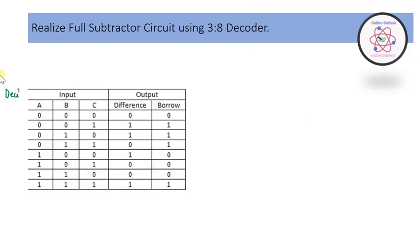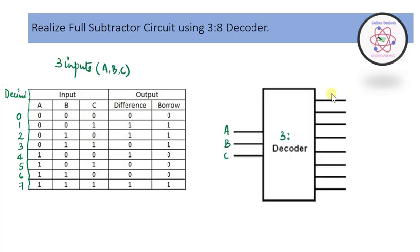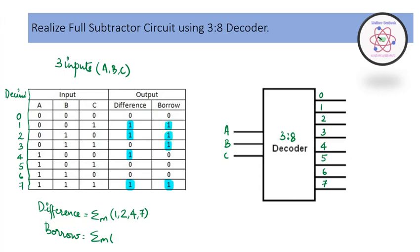The last case is the realization of the full subtractor using a 3-to-8 decoder. From the truth table, I highlight the outputs corresponding to logic 1 for the difference and borrow to write their min term representations. Since there are three inputs, I use a 3-to-8 decoder with 8 output lines, and combine the min terms using OR gates to implement the difference and borrow.